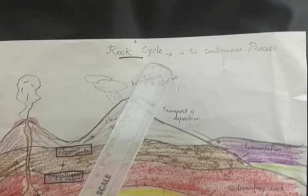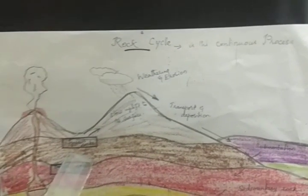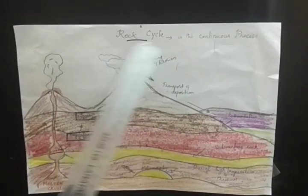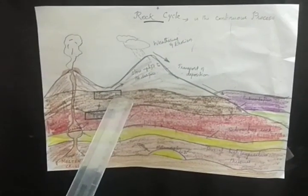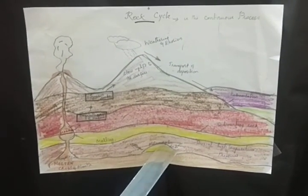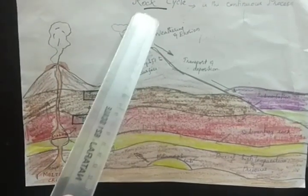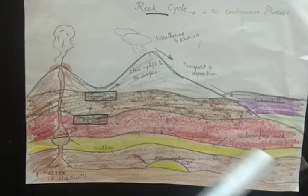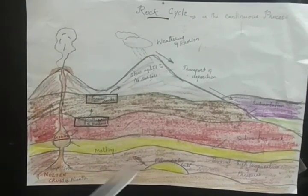Now we are going to see about the rock cycle. The rock cycle is a continuous process in which igneous rocks, sedimentary rocks, and metamorphic rocks are transformed from one form to another.